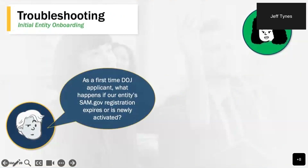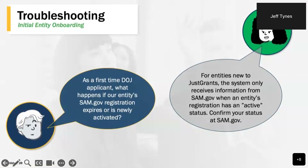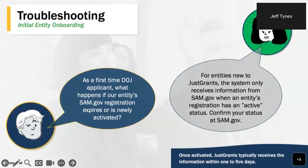Here are some common questions related to initial entity onboarding. New entities often ask what to do if their SAM.gov registration is newly activated. JustGrants only receives information from SAM.gov when an entity's registration is active. Visit SAM.gov and use their check entity status function to confirm that status. Once the SAM.gov status is activated, JustGrants will receive that information usually within one to five days. It's a good idea to verify your SAM.gov account is active prior to beginning your application process.